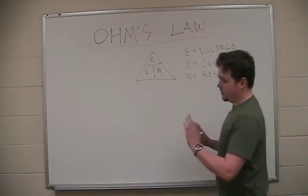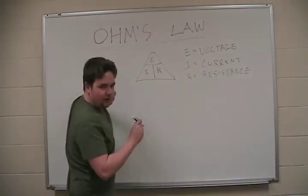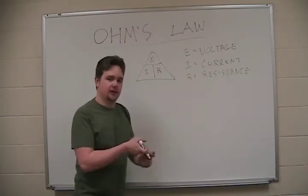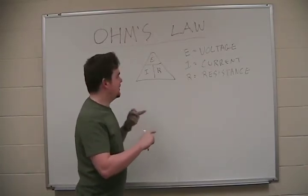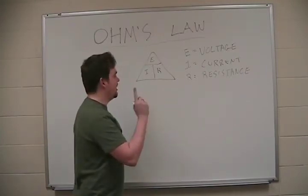Now the way to understand this triangle is this. You always need two variables in order to find the third. So if you have one variable, you can't find the other two. You need at least two to find the third. But you can always find the third if you have two.